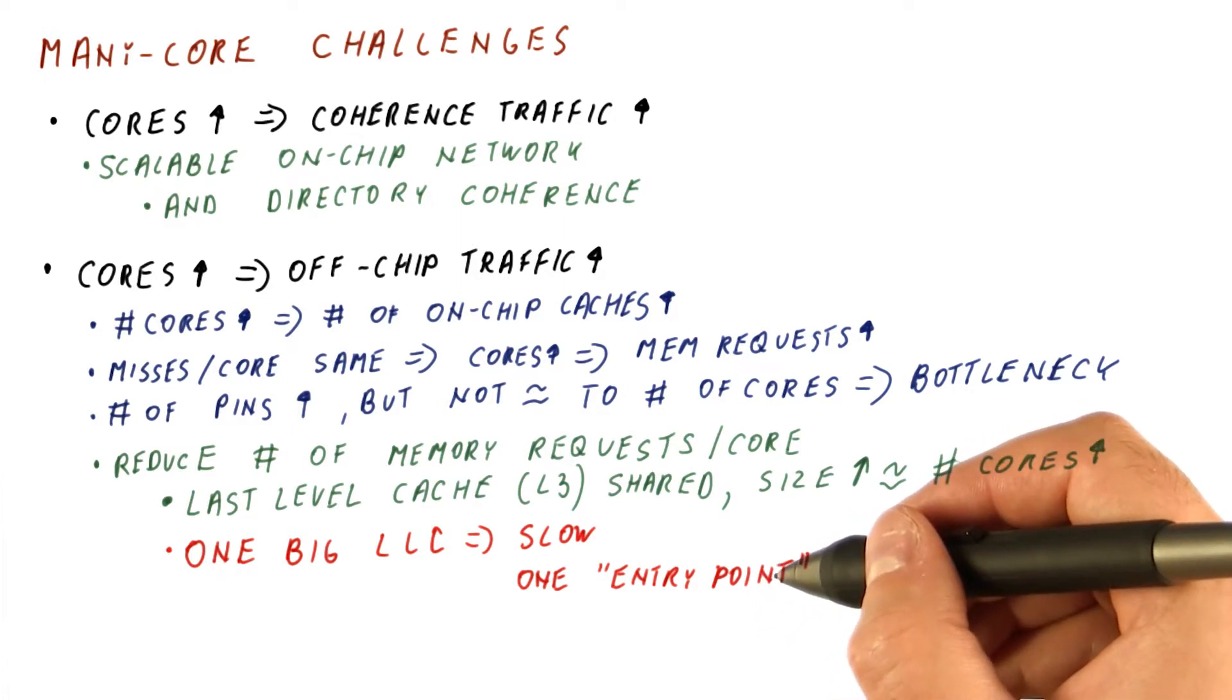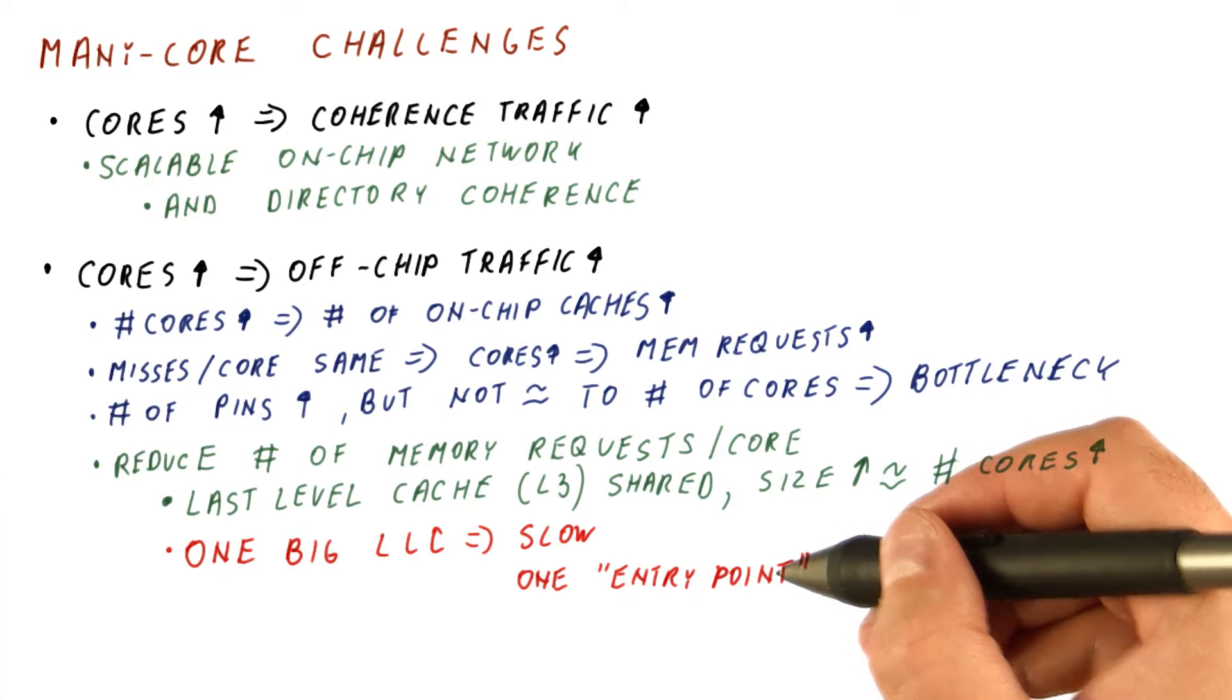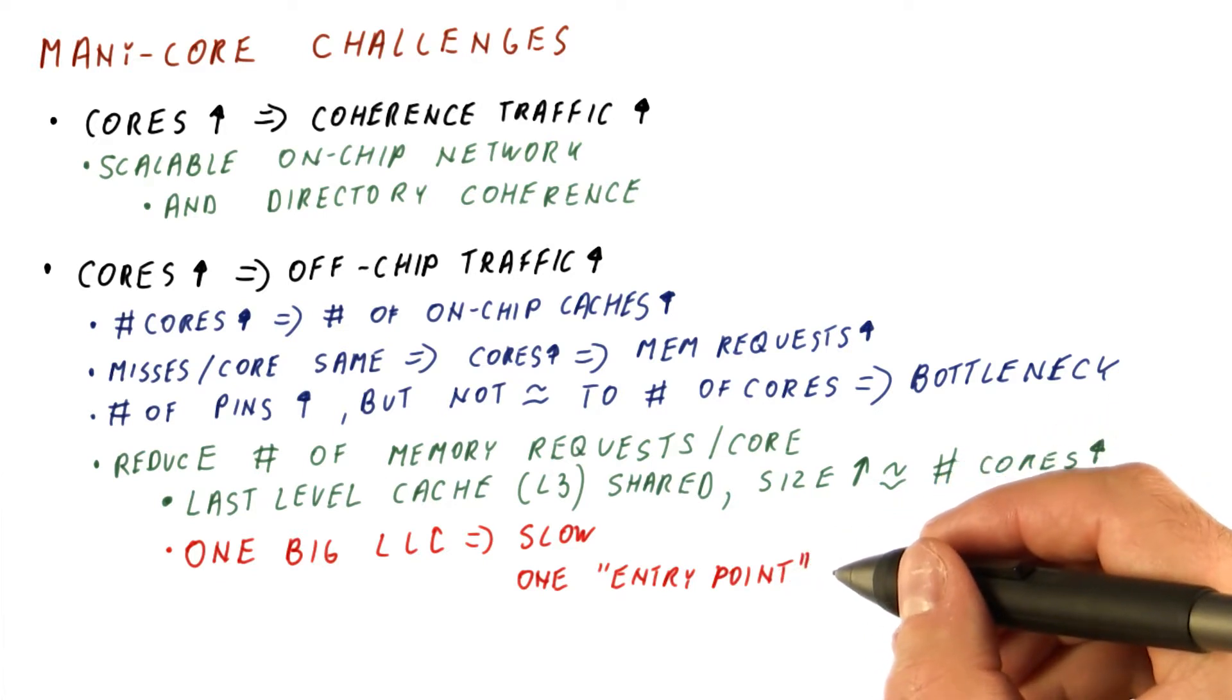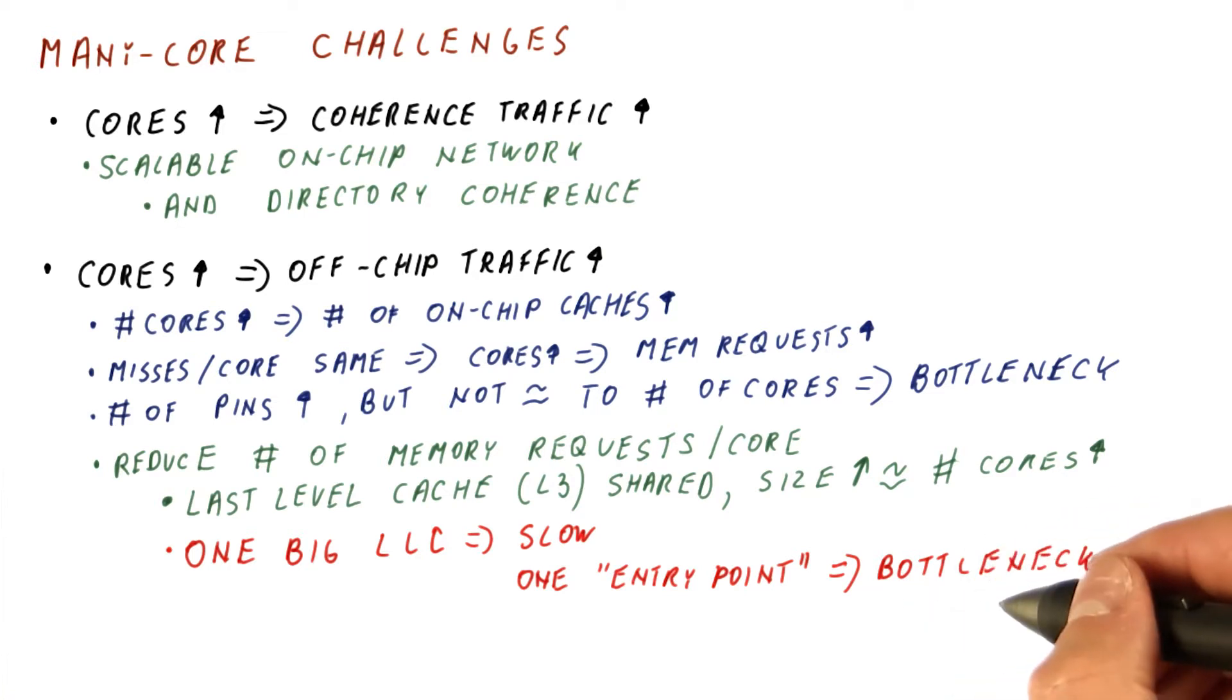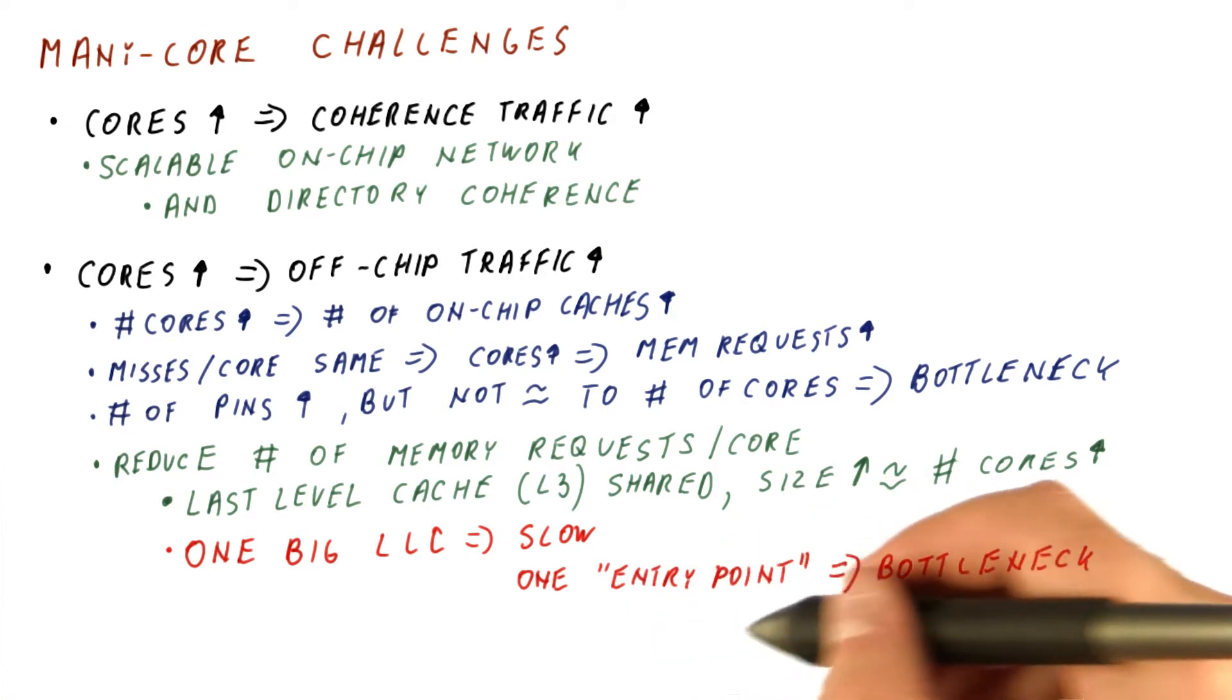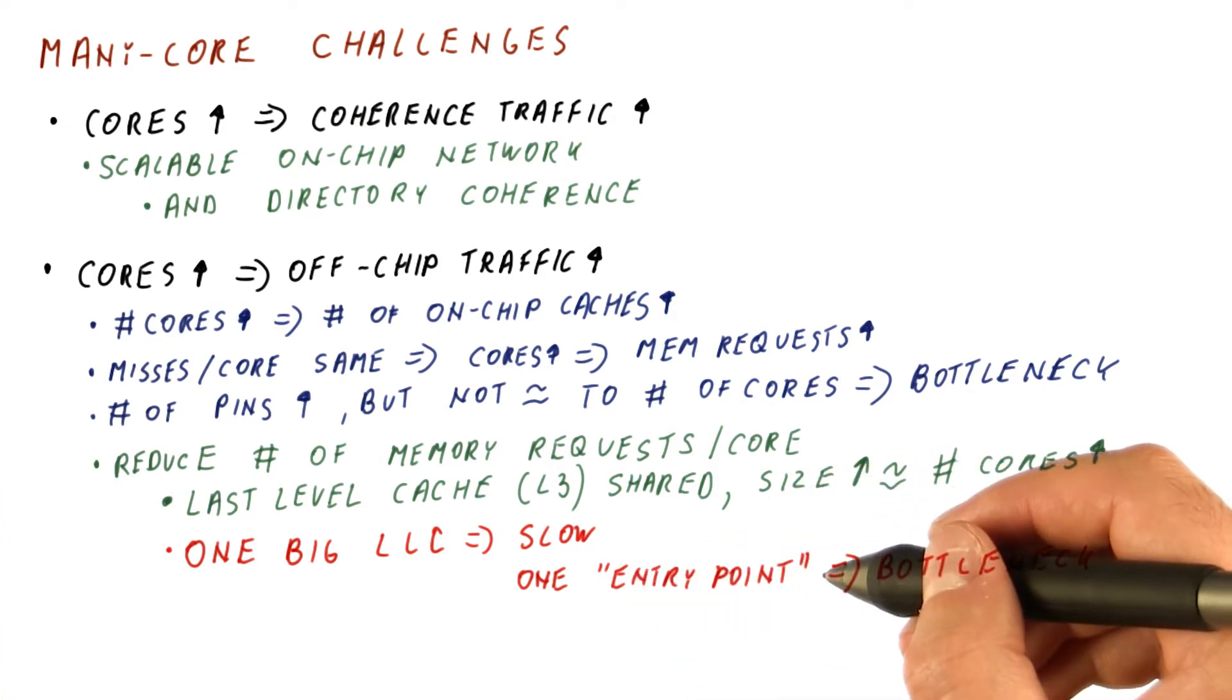And that entry point needs to be somewhere on our chip that now possibly has a mesh or another advanced network. And that means that that one point will be where we send all of the level two misses. So it would become a bottleneck. Pretty much now we don't get to use all of the links equally. This set of links that go to this entry point for the cache would get much more traffic than the other links.